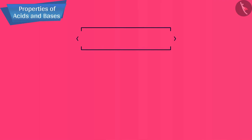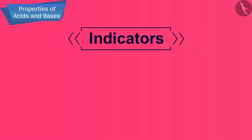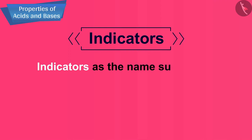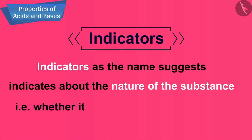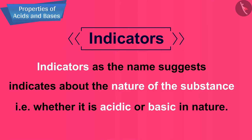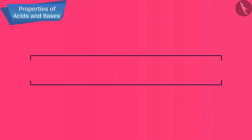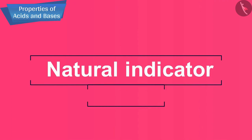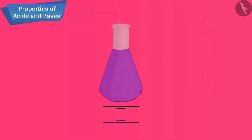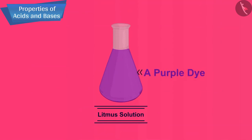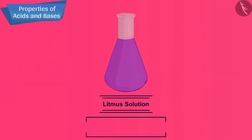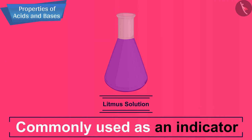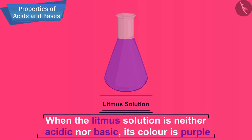Let us now talk about what are indicators. Indicators, as the name suggests, indicate the nature of a substance — that is, whether it is acidic or basic in nature. Let us talk about the first natural indicator, which is litmus. Litmus solution is a purple dye which is extracted from lichen, a plant belonging to the division Thallophyta, and is commonly used as an indicator. When the litmus solution is neither acidic nor basic, its colour is purple.